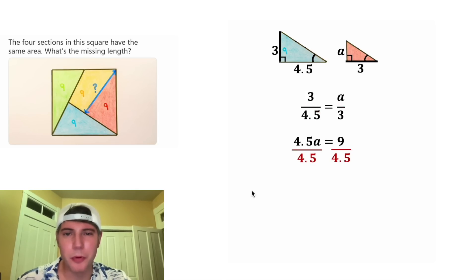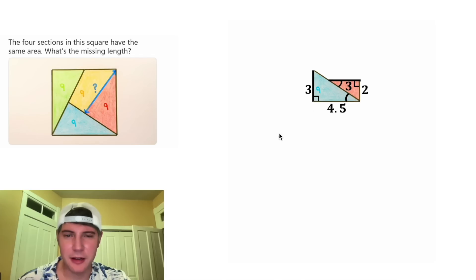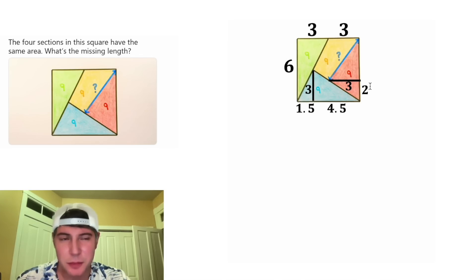After we divide both sides by 4.5, we get A equals 2. So let's update this A to be 2. Let's smush the triangles back together and bring back everything else. We just discovered that this piece was 2, and the whole height is 6, so this piece will be 4.